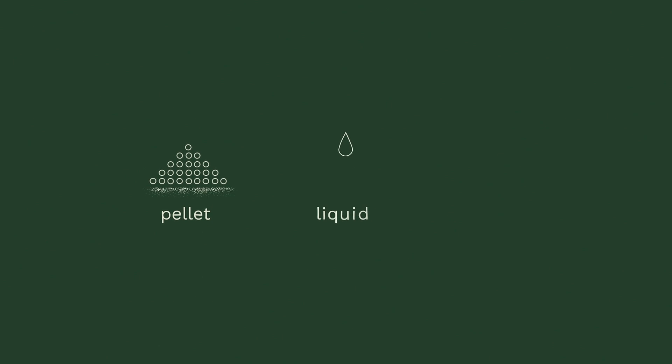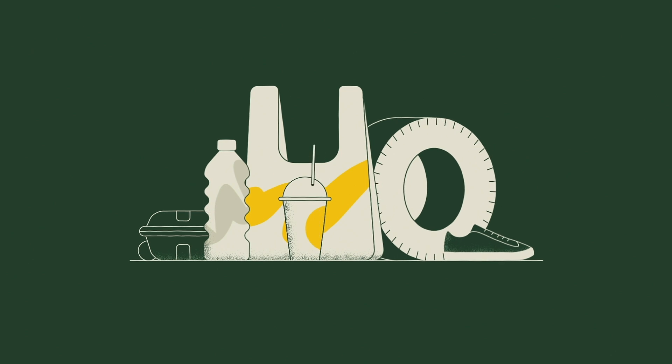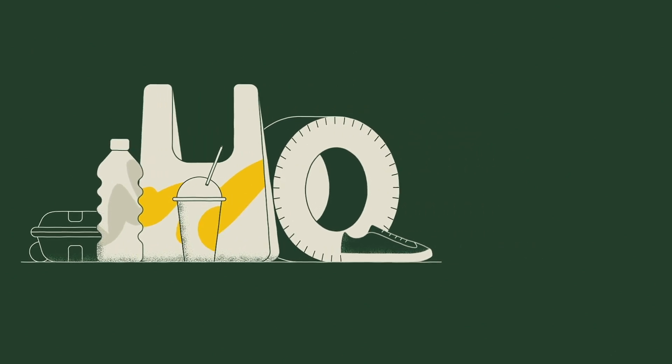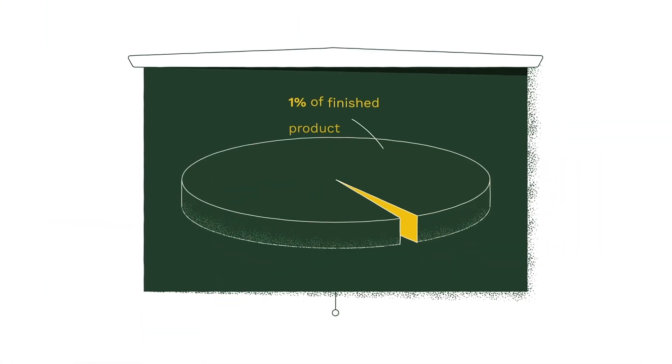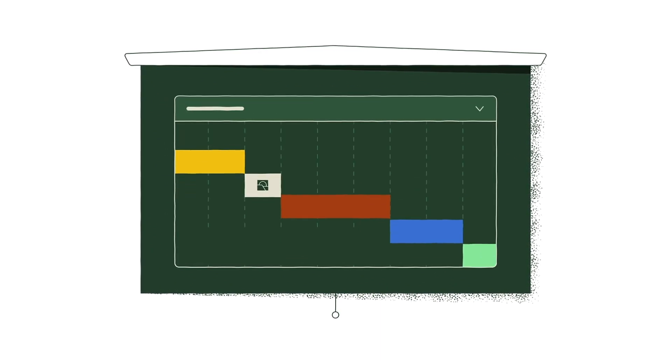Available in pellet, liquid, and powder formats, our additives can be easily integrated into virtually any kind of plastic product. The additive only makes up about 1% of the finished product and requires minimal changes to the manufacturing process.